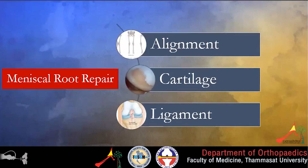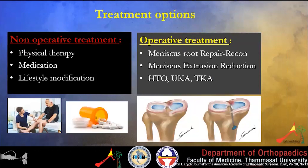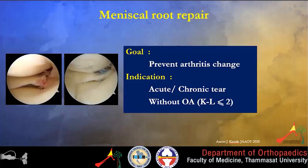In meniscus root repair management, the factors to consider are alignment, cartilage, and ligament status. The options are non-operative and operative treatment. Non-operative treatment includes physical therapy, analgesics for symptomatic treatment, and activity modification. Surgical options include meniscus root repair, reconstruction, meniscus extrusion reduction, high tibial osteotomy (HTO), unicompartmental knee arthroplasty (UKA), or total knee replacement. The goal of meniscus root repair is to prevent arthritic changes and it is indicated for acute and chronic tears without substantial concurrent meniscal pathology.